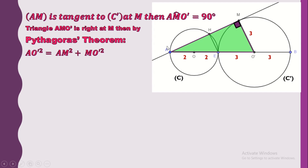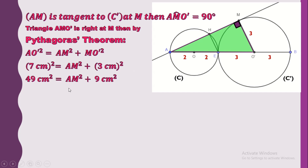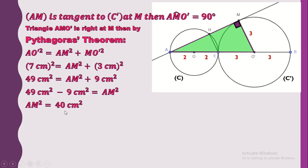To apply the Pythagorean theorem, we start with the hypotenuse squared, which faces the 90 degrees. So AO prime squared equals AM squared plus MO prime squared. Replacing each side by its length: AO prime squared is 7 squared, which equals AM squared plus MO prime squared, which is 3 squared. So 49 cm² equals AM² plus 9 cm².